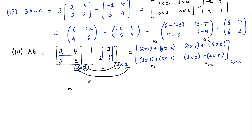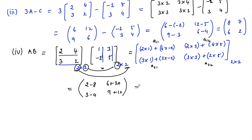Computing: 2 minus 8 is negative 6, 6 plus 20 is 26, 3 minus 4 is negative 1, and 9 plus 10 is 19. So the product AB equals the 2 by 2 matrix negative 6, 26, negative 1, 19.